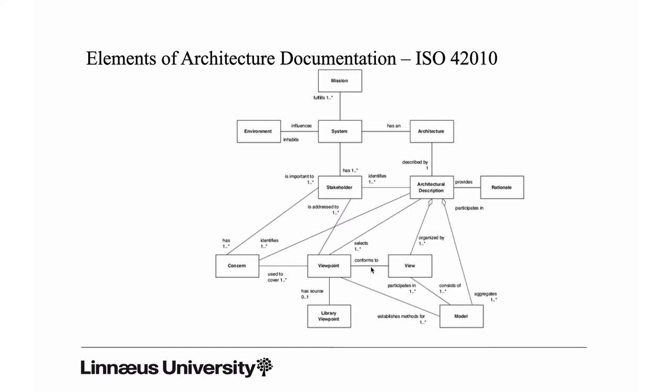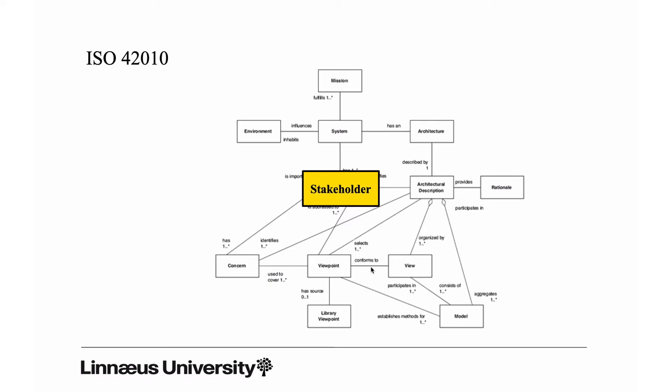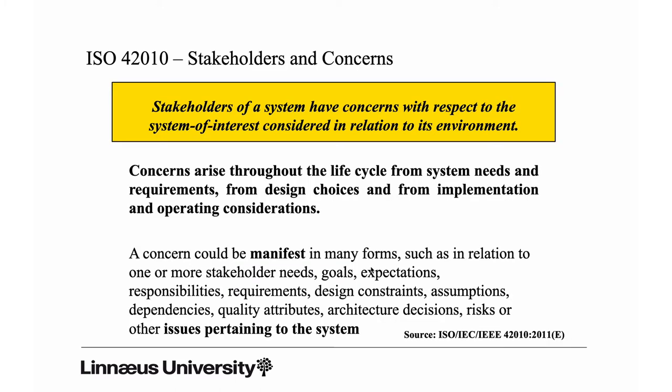At the center of this domain model you find stakeholders. Stakeholders are groups of people — or roles actually — that have some concern, meaning they are somehow interested in the system; they have a stake in that system. Looking into the standard: stakeholders of a system have concerns with respect to the system of interest considered in relation to its environment. So we have the system, we have the environment, and then a group of stakeholders who have interest in that system.